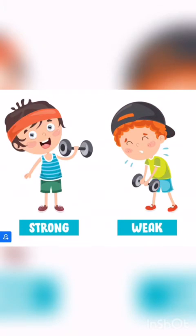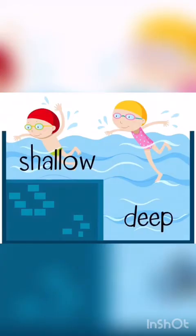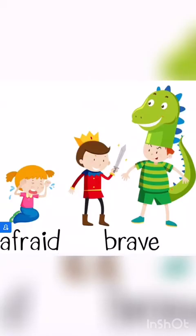The next word is strong. The opposite of strong is weak. Strong — weak. The next word is shallow. The opposite of shallow is deep. Shallow — deep.